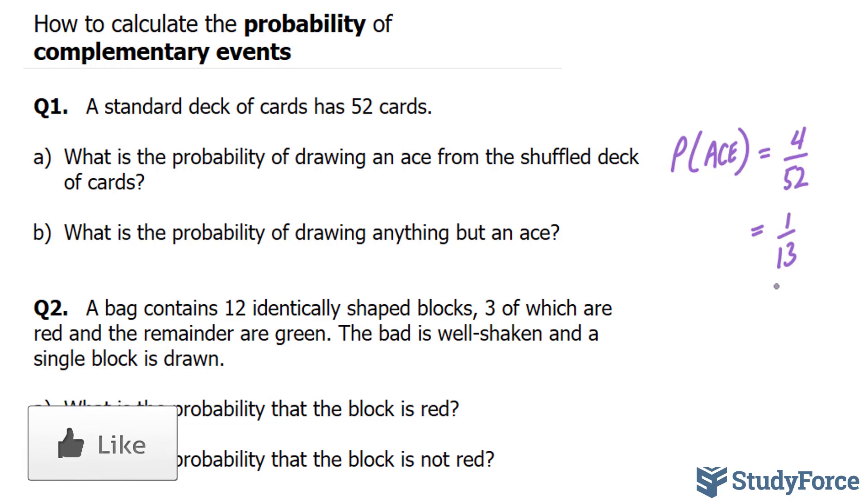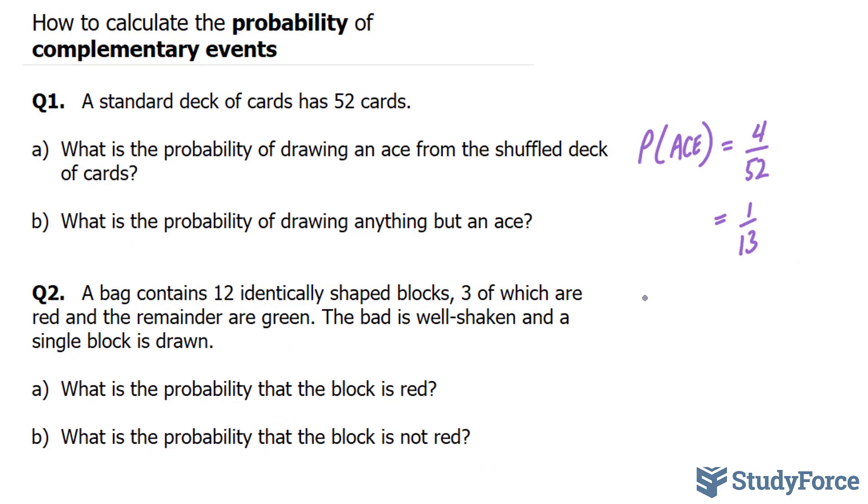The next question is, what is the probability of drawing anything but an ace? And that's where the definition of complementary events comes from, which is the probability of not getting what it is that you are looking for. So in our case, what we have is the probability of not obtaining an ace.